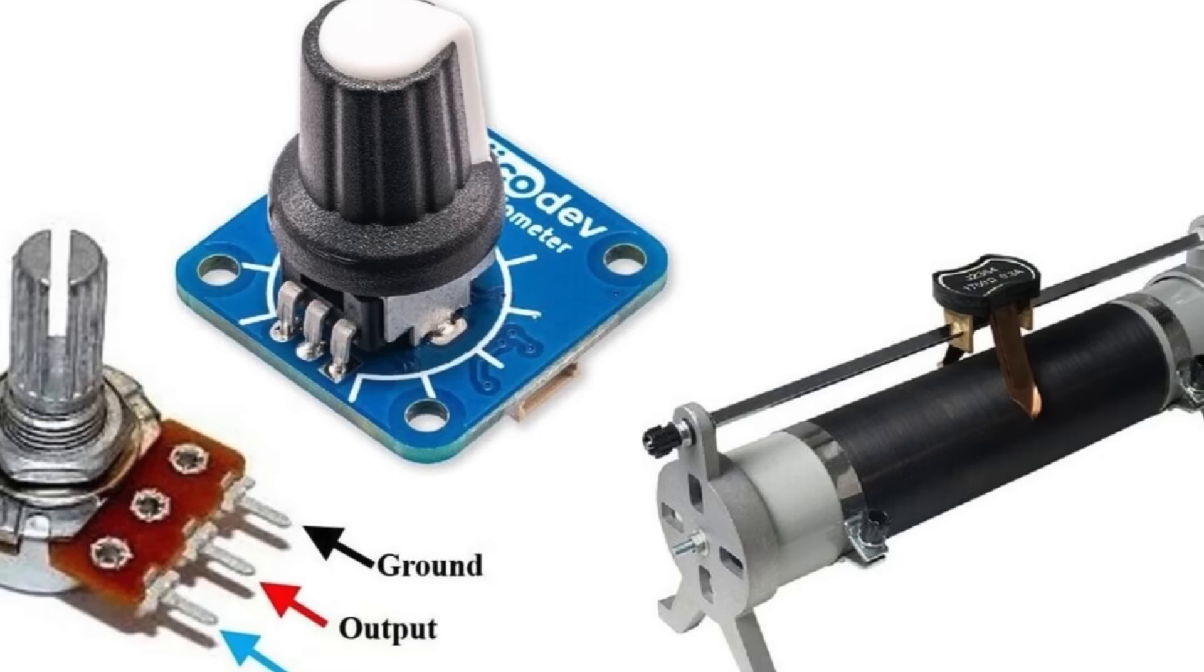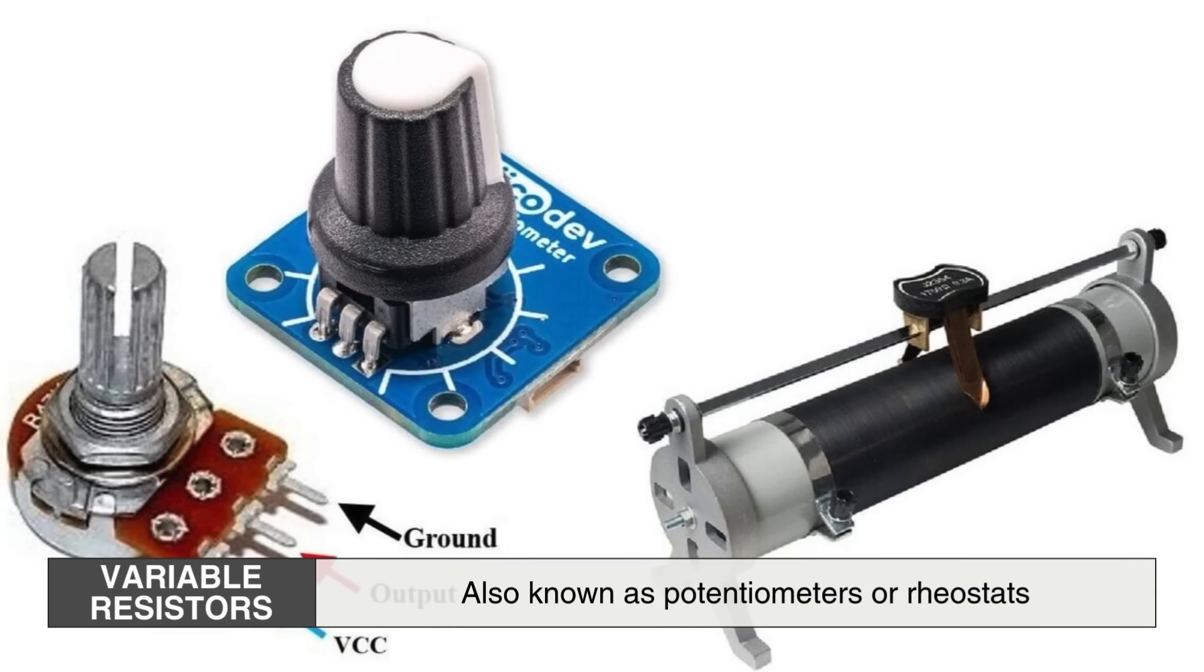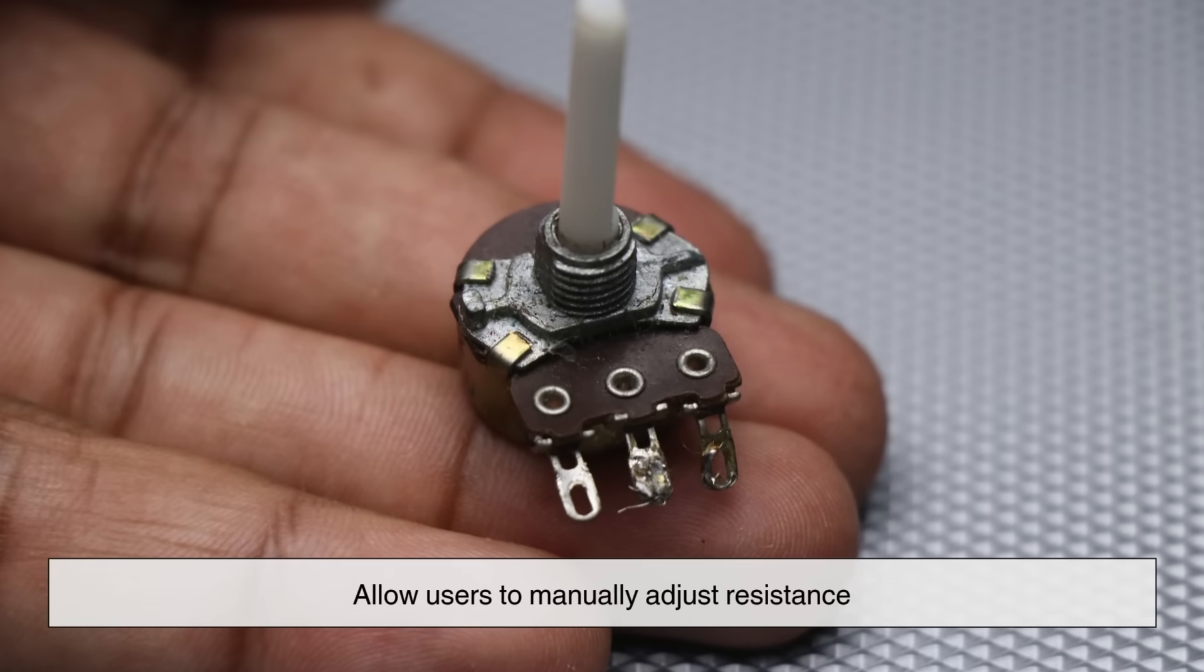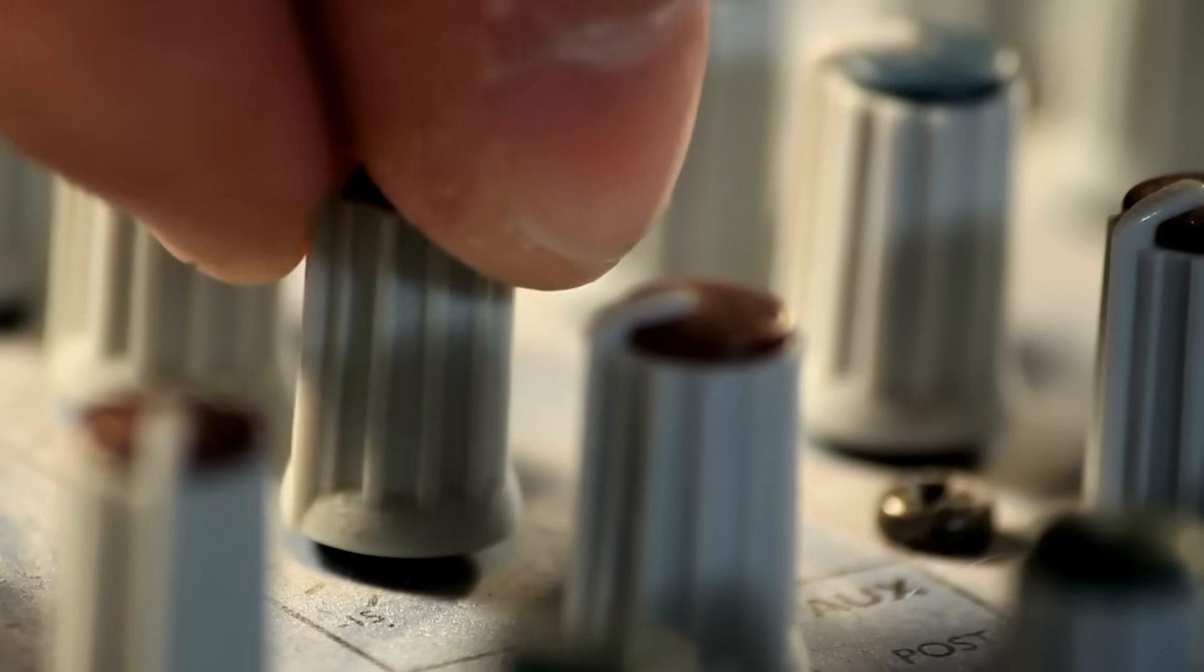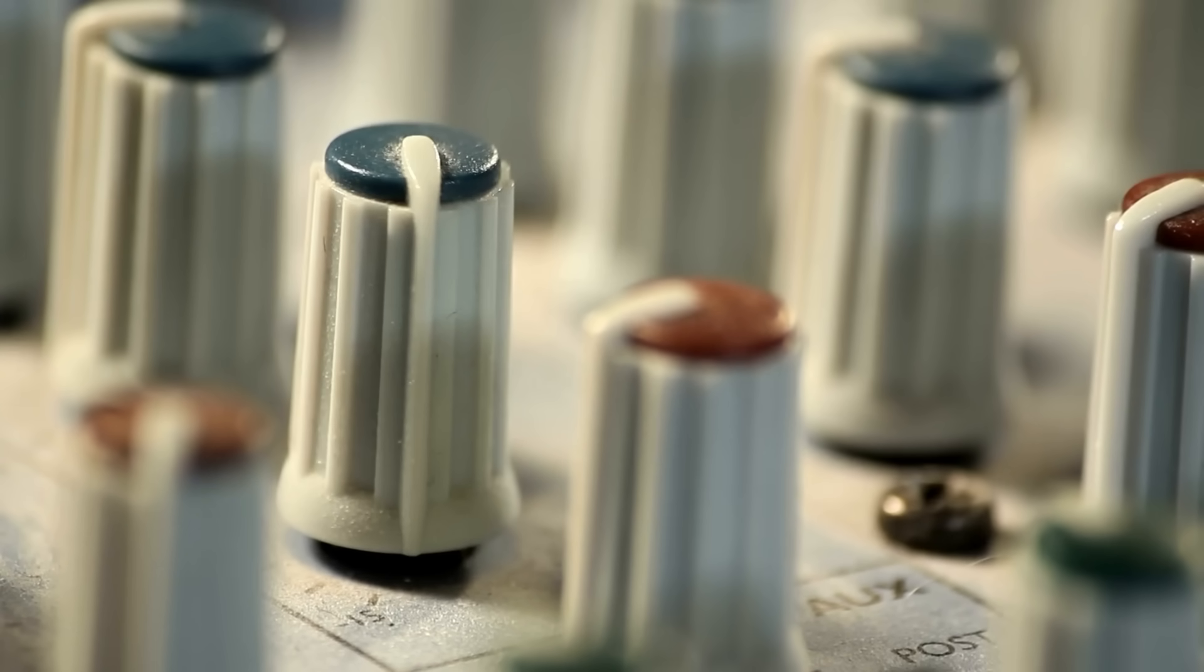Another important category is variable resistors, also known as potentiometers or rheostats. These resistors allow users to manually adjust resistance, making them ideal for volume controls in audio systems and dimmer switches in lighting applications.